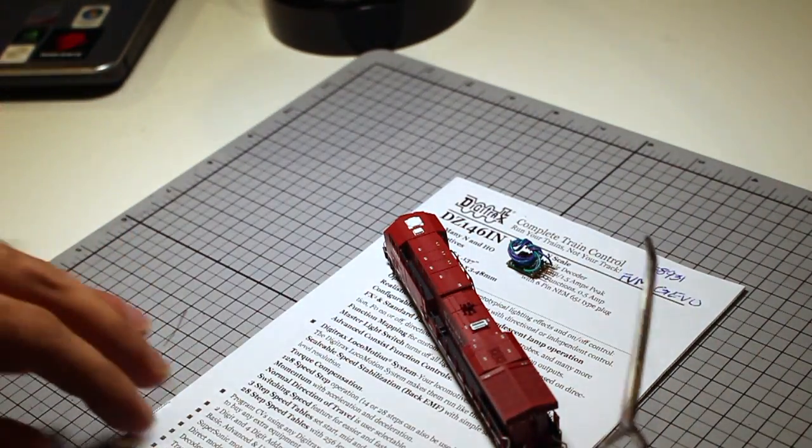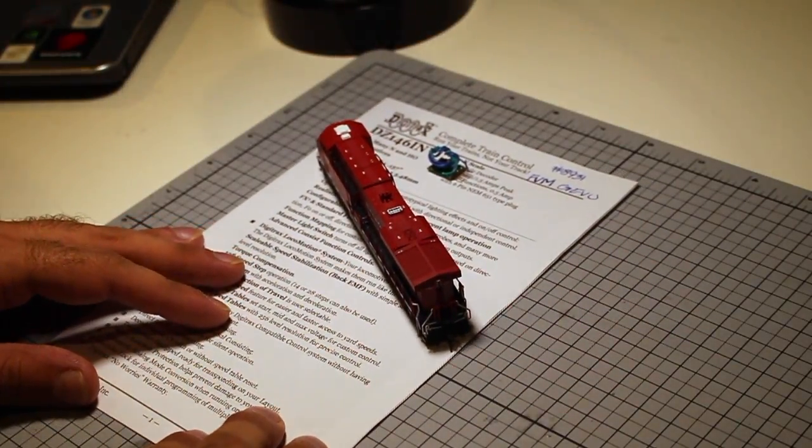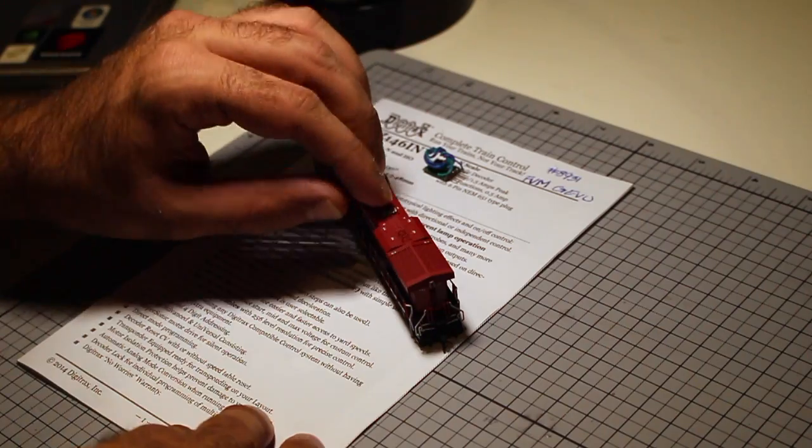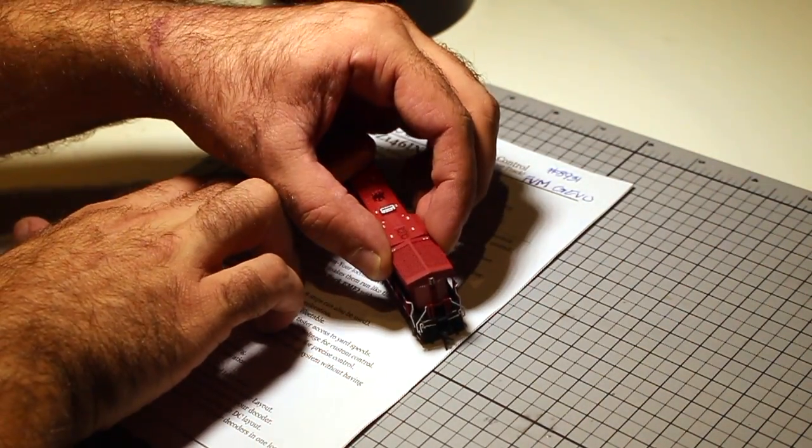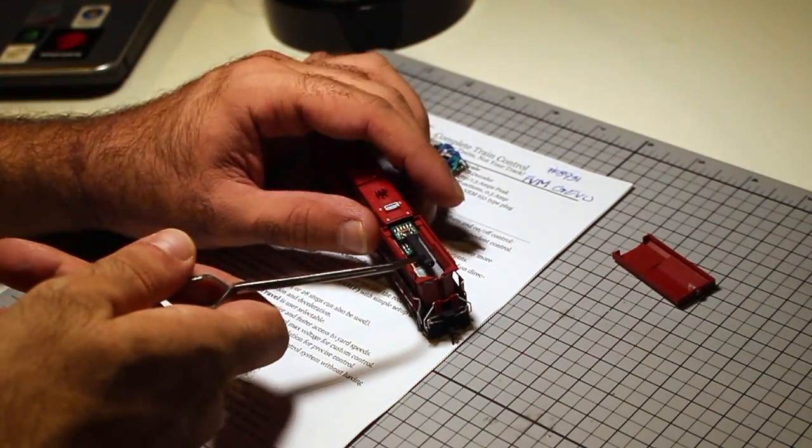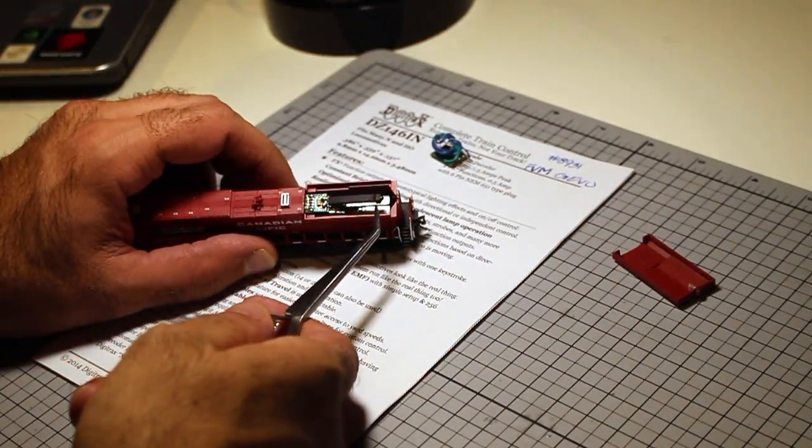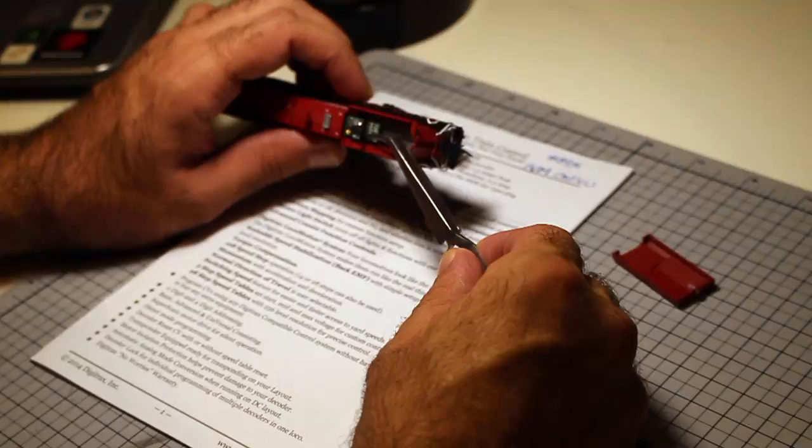First thing we got to do is get ourselves some pliers and center this inside. Right over here on the back, just pops it off. Lift this light. Underneath is the DC board.